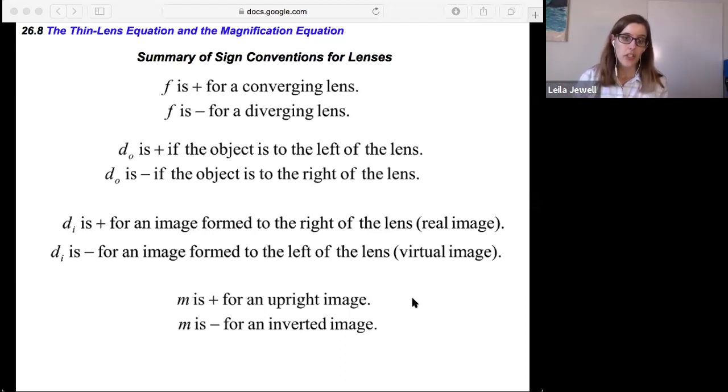And then magnification is, as before, positive for an upright image, negative for an inverted image. So those are really useful conventions. You can write this on your crib sheet as well, because that's information that you have to put in when you're using the magnification and thin lens equations.